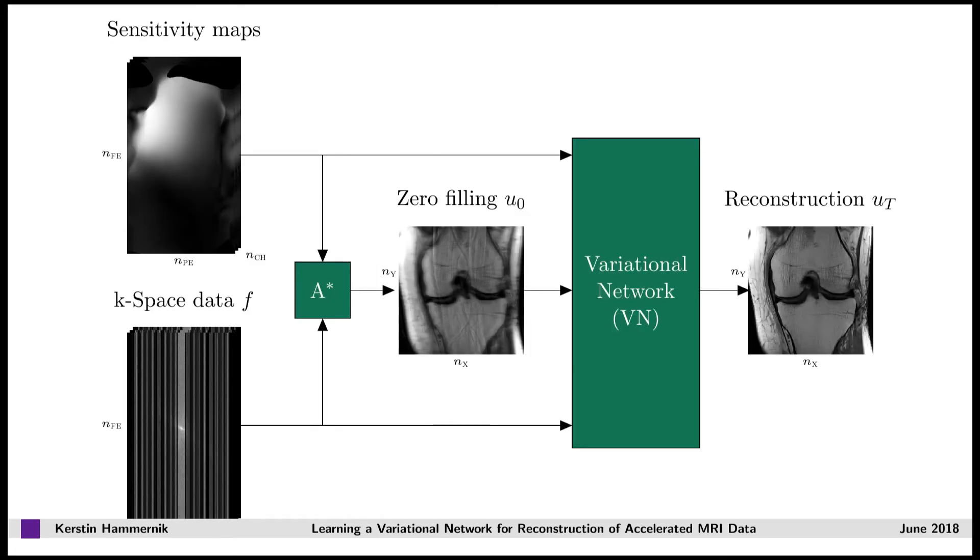In our variational network, we do not only include the zero-filled reconstructions, but also the raw multi-coil k-space data as well as the coil sensitivity maps.